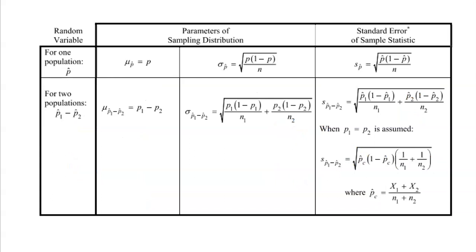There are two sections on the formula sheet — one for means and one for proportions. You'll see the two formulas already given, and it also covers standard error. Standard error is what you use instead of standard deviation when you don't know the true population proportion P and only know your sample proportion P-hat — the only difference is replacing P with P-hat. That's used for inference procedures like confidence intervals and hypothesis tests.